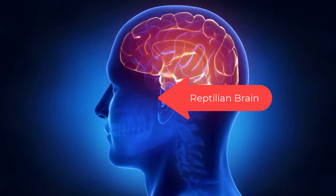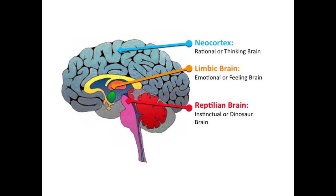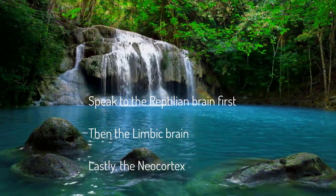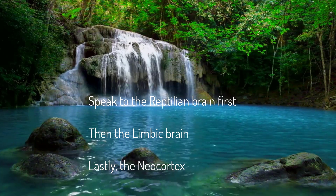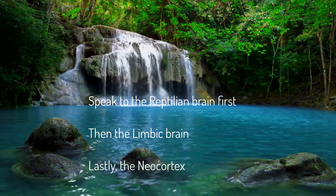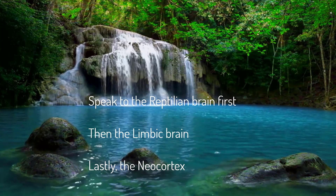The old brain — the reptilian brain — decides. It can take into account input from the other brains, but it can also decide faster than the blink of an eye, then use the other brains to justify the decision. The reptilian brain is visual and hardwired into the brain stem. It can make survival decisions before you or the other brains can even begin to process the data.